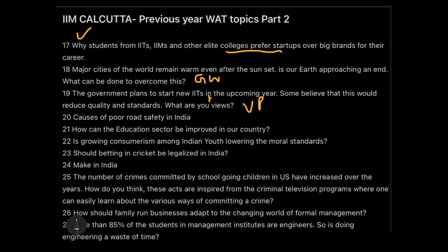Topic 20: Causes of poor road safety in India. This is essentially an essay on road accidents — highlighting the problems in transportation and the actual crux of road safety issues. Every word matters here; they are specifically asking for 'causes,' so you must mention why road safety is poor: government corruption, bad maintenance, bad quality of materials used in construction. This is a descriptive-based essay, much easier than some argumentative essays.